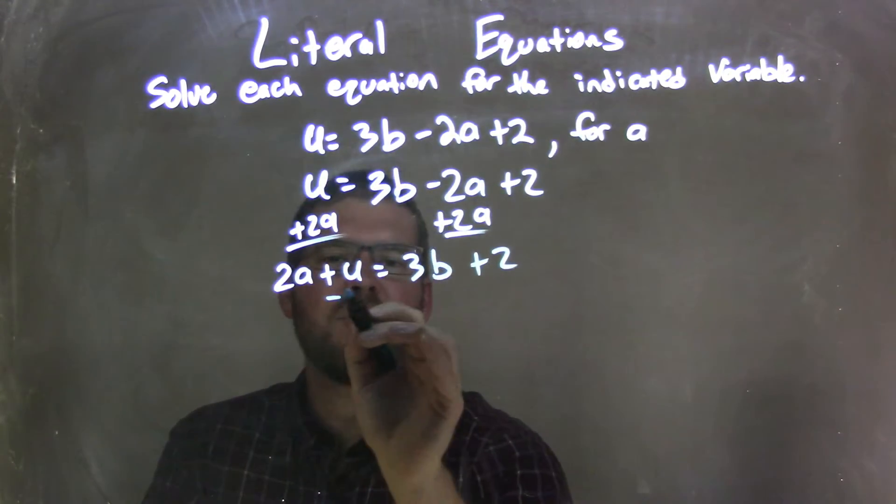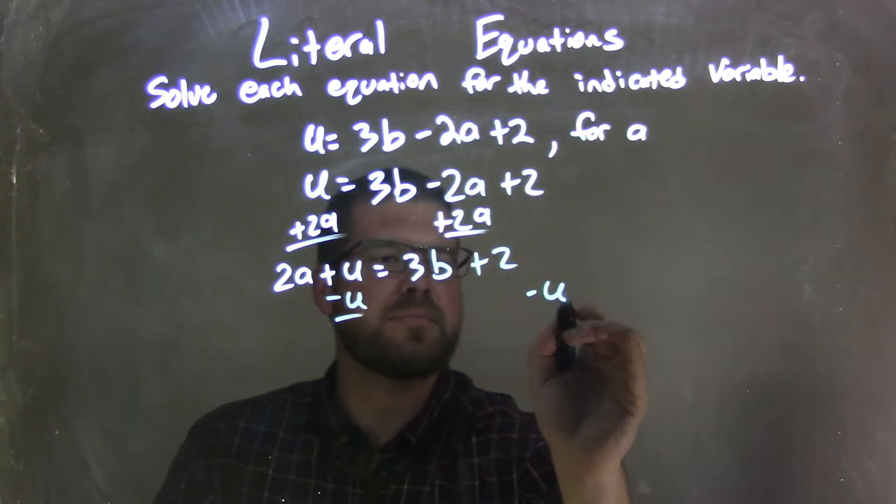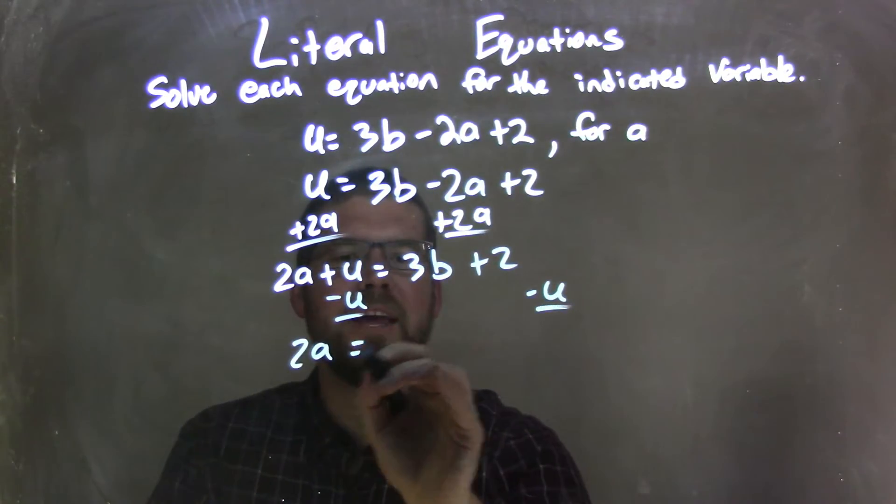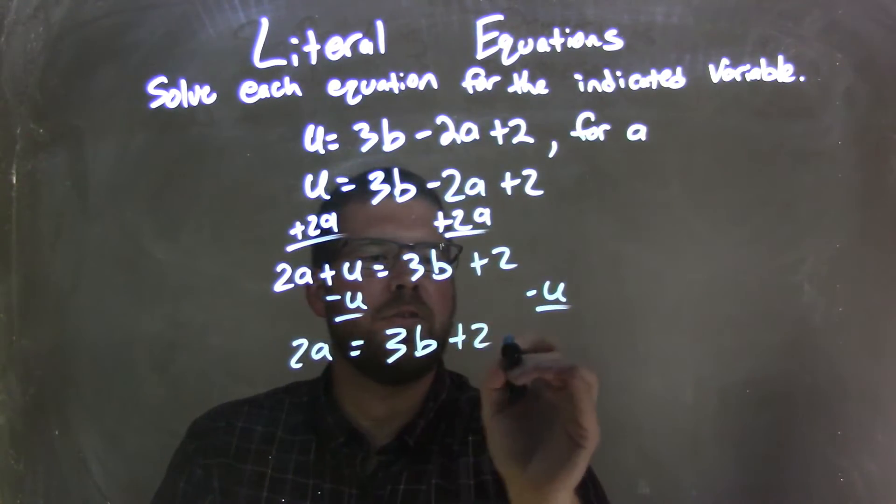I then can subtract u from both sides, leaving me with 2a equals 3b plus 2 minus u.